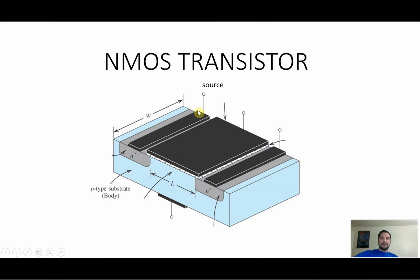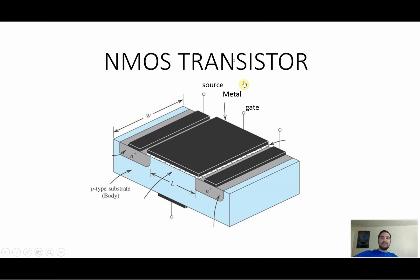We're going to have a source right here. This terminal is connected to a piece of metal. This metal in modern MOSFETs is fabricated with fully silicided polysilicon. We also have a gate right here that is connected to the metal. We have a drain. And this white piece right here is an insulator — it's an oxide, silicon oxide.